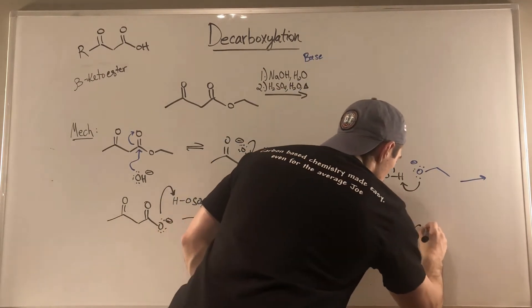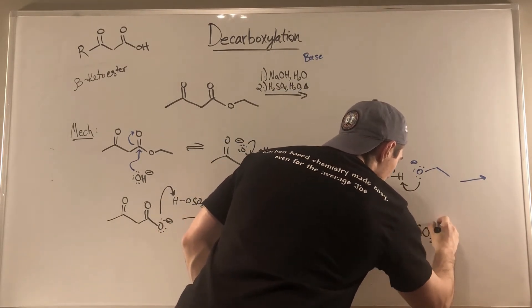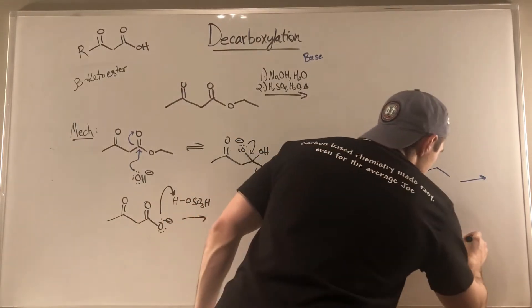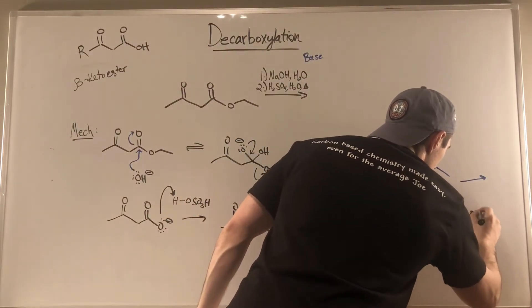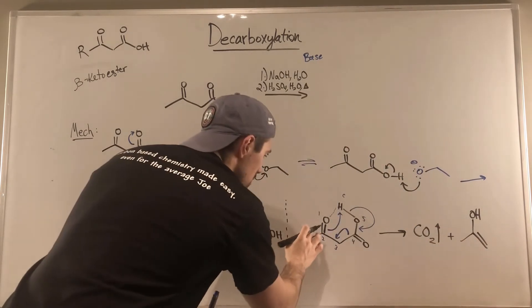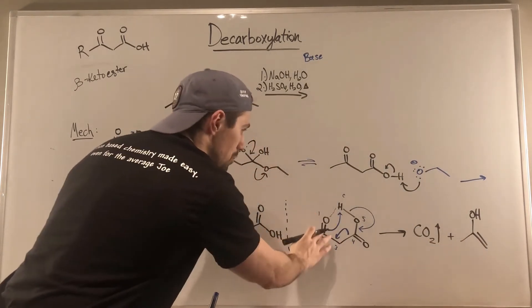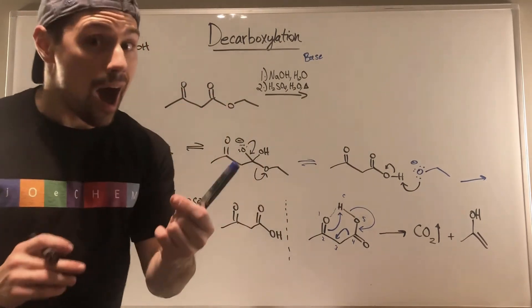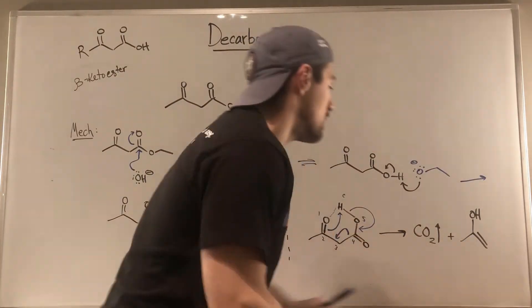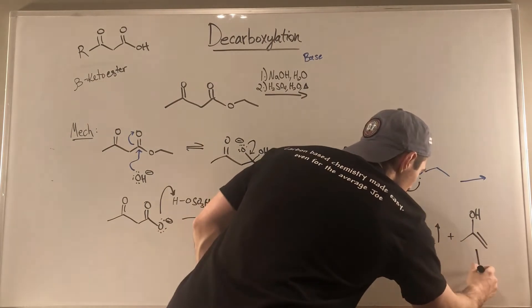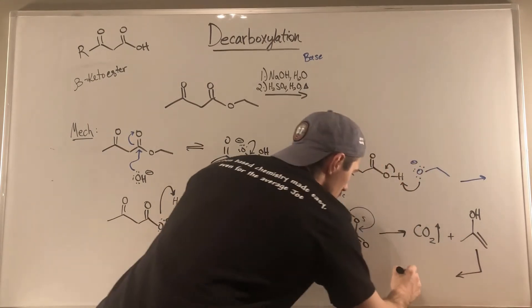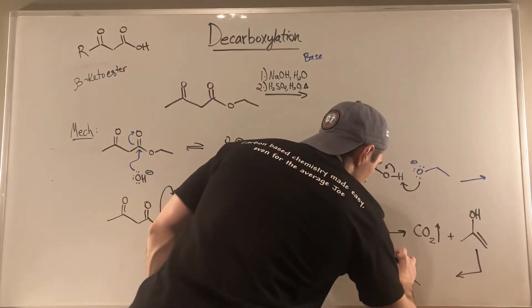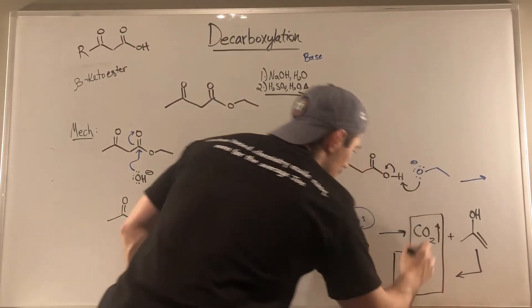So we do get CO2 going up in the air, and what we're left with is this — one, two, three, a double bond here, single bond here, OH. And I hope that you're seeing: aha, this is an enol. This is going to immediately flip; it's going to tautomerize to its keto form. So we get CO2 and we get a ketone.